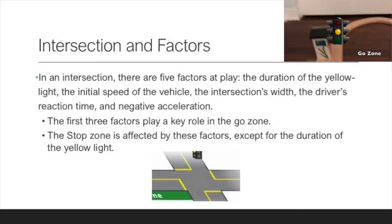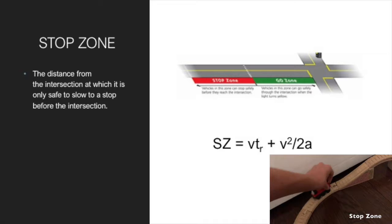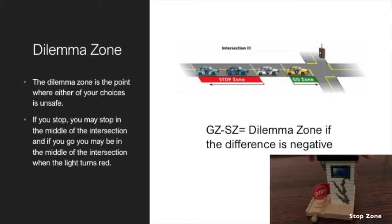The first three factors play a key role in the go zone, the distance from the intersection where you know you will be safe and make it across. The stop zone is the opposite and is affected by these factors except for the duration of the yellow light. In the stop zone, you stop. In the go zone, you go. Sometimes they overlap, and sometimes they create a dilemma.